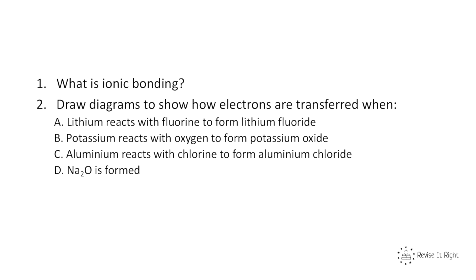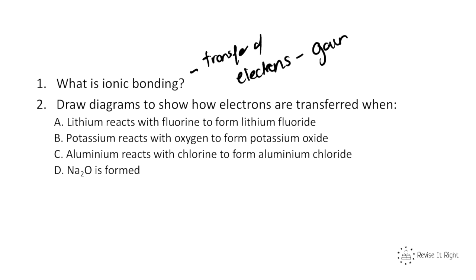Now have a go at answering the practice questions to test your understanding — pause the video. Okay, let's go through the answers. Question one: what is ionic bonding? Ionic bonding is the transfer of electrons, meaning one atom is gaining an electron and another atom is losing one or more electrons.